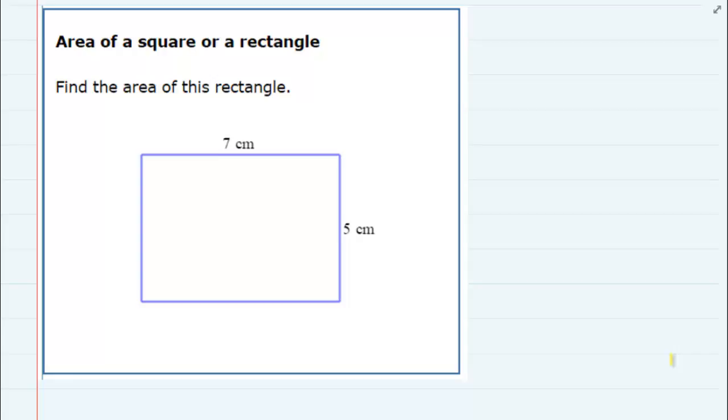We're asked to find the area of this rectangle and we're given two distances. We're given the length, seven centimeters along this side, and we're also given the width, five centimeters along this side.